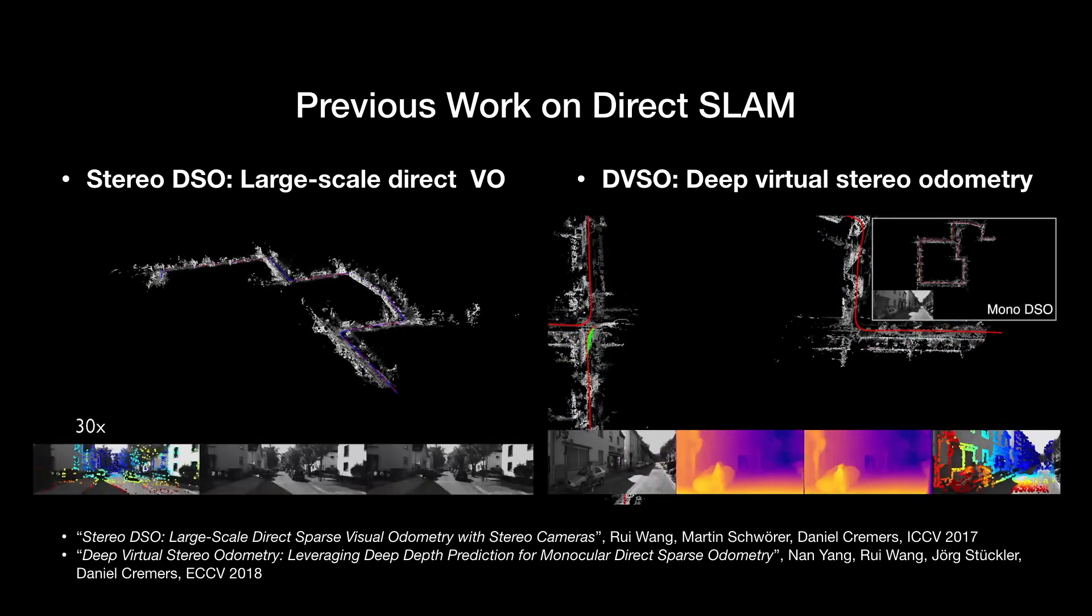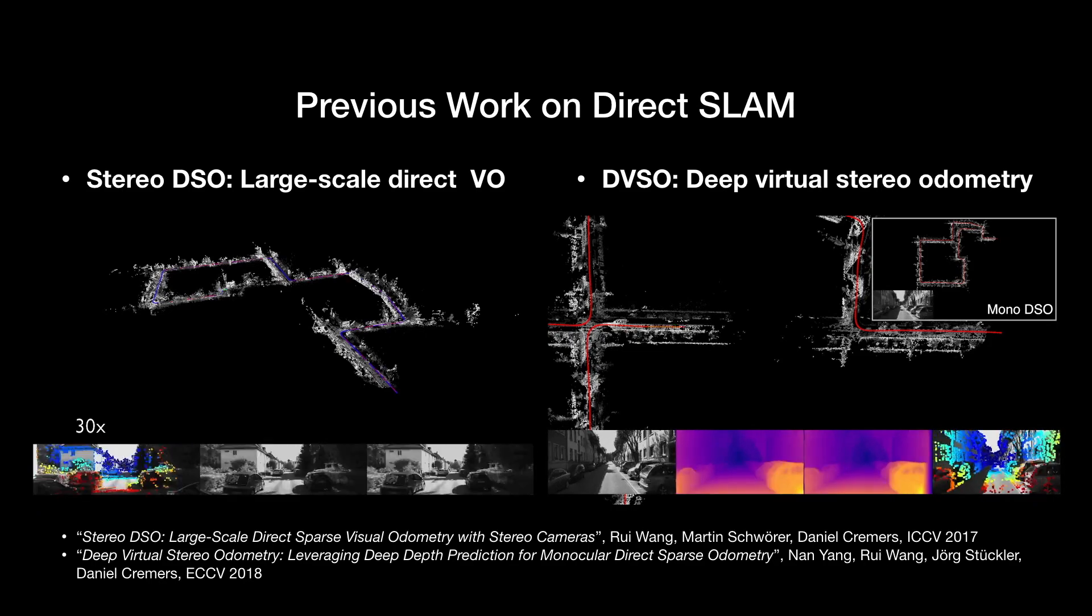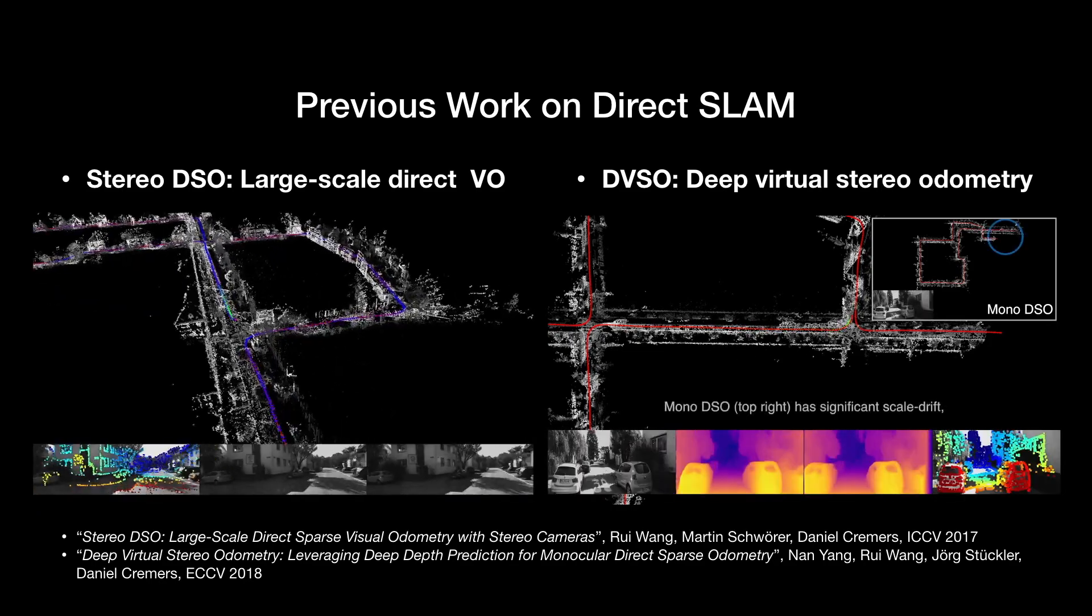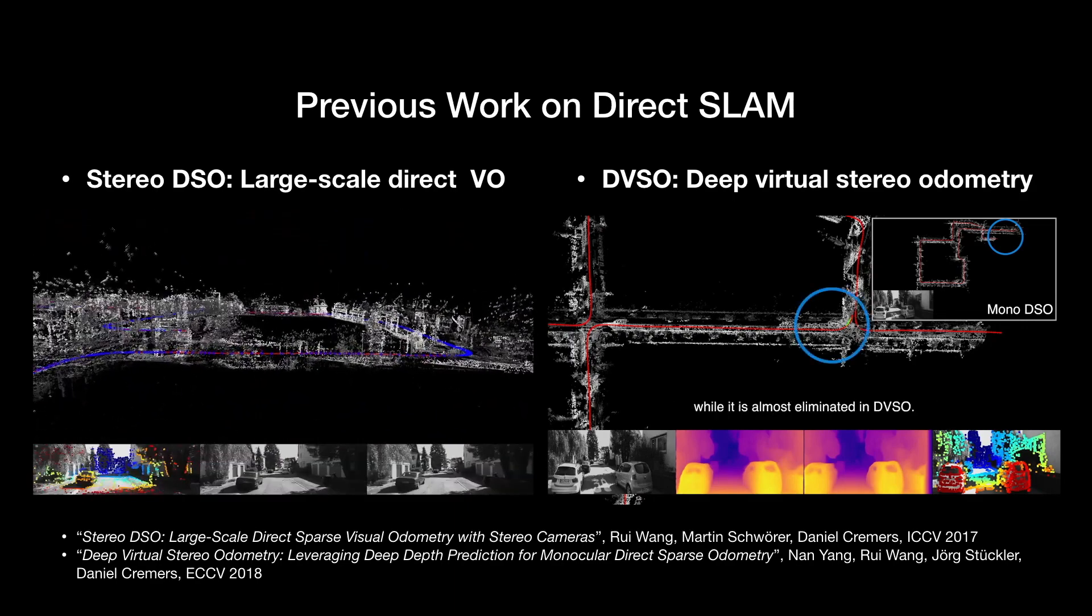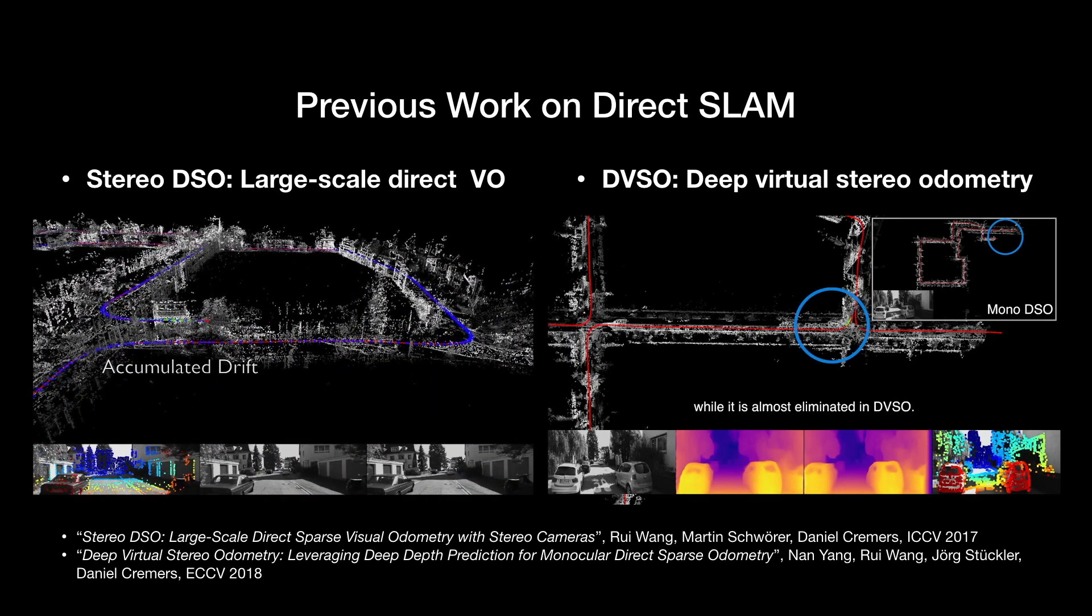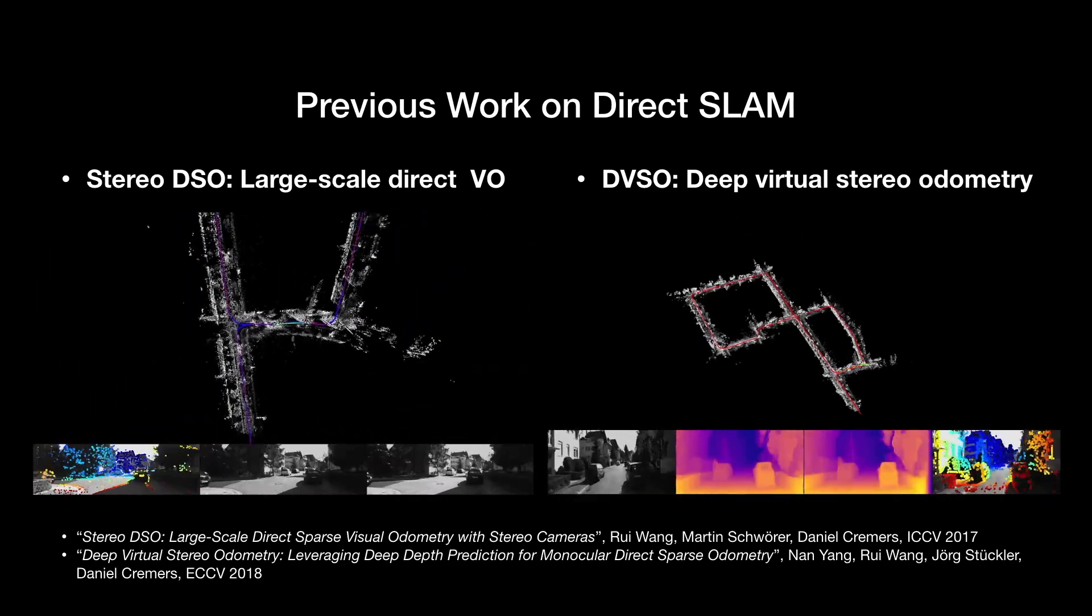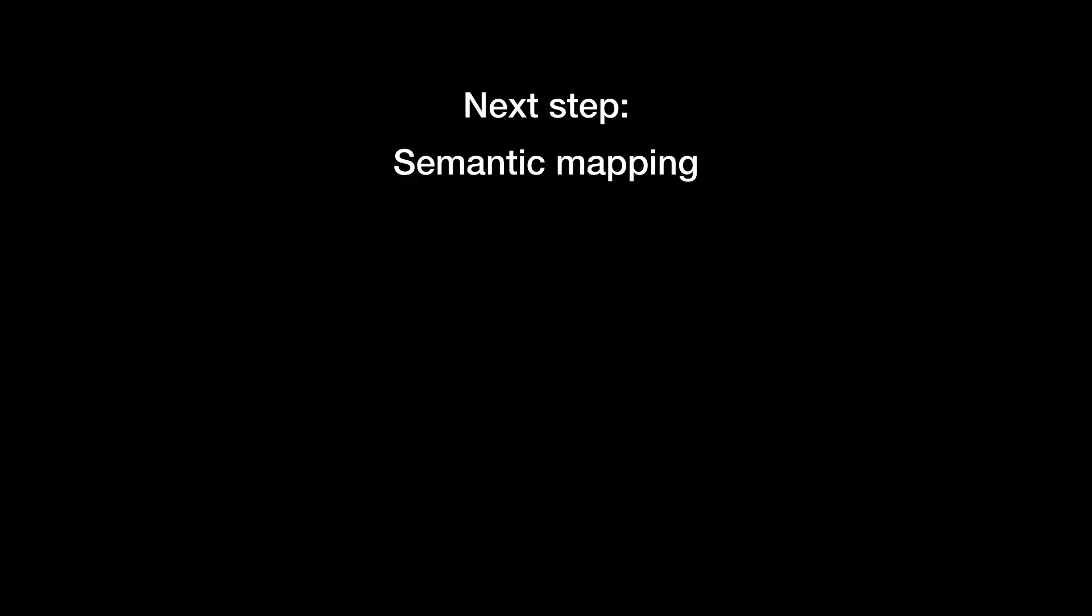To move forward, several open problems remain to be addressed. For example, how can semantic information be integrated into the 3D map to make them more practically useful? Also, instead of raw point clouds, can we find more descriptive and compact map formats?